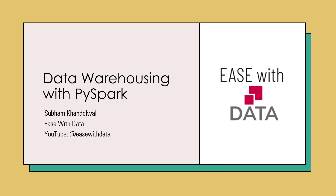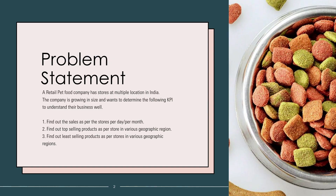Feel free to adjust the speed of the playback as per your needs. For this series, we have this problem statement. A retail paid food company has stores at multiple locations in India. The company is growing in size and wants to determine the following KPIs to understand their business well.